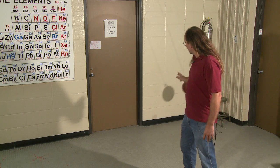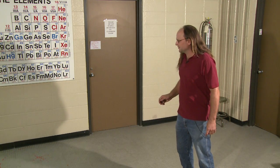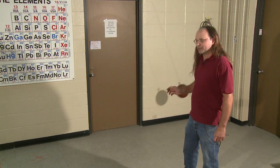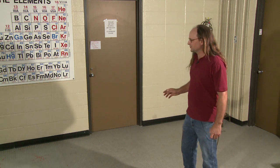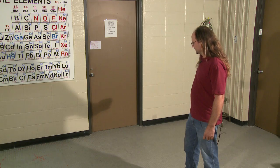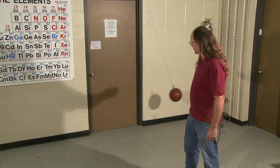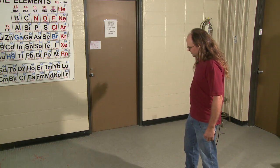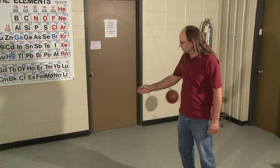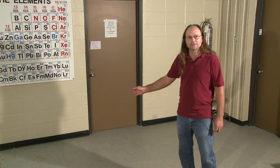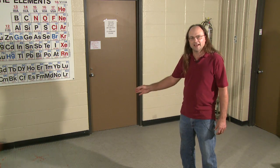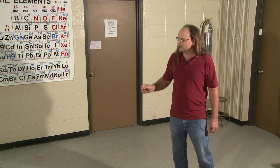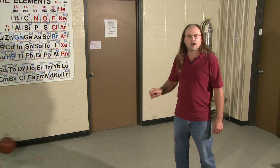Today we will be using a simple pendulum to demonstrate the law of conservation of energy. A pendulum works well for this because at the top of its swing, it has 100% gravitational potential energy. As it continues through its swing, at the bottom it converts gravitational potential energy to kinetic energy, and then it converts that kinetic energy back to gravitational potential energy at the top of its swing.